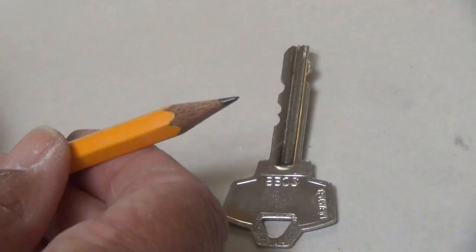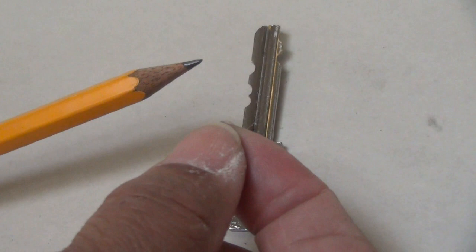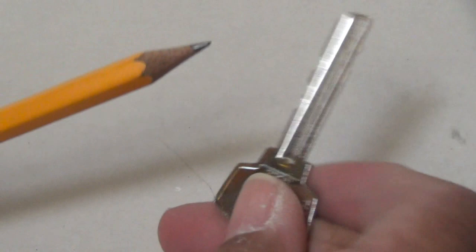So graphite, like what's in the pencil lead, is the best lubricant for the interior of a lock. In fact, they sell graphite in a powder form in a hardware store. But let's say you don't have graphite around the house. Well, believe it or not, we're gonna use a pencil to lubricate our key and our lock. Let me show you how to do this.